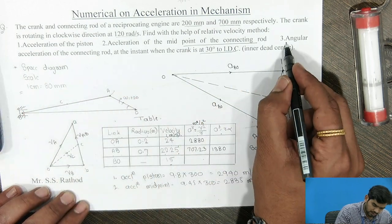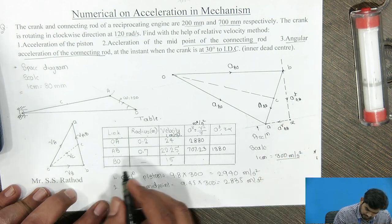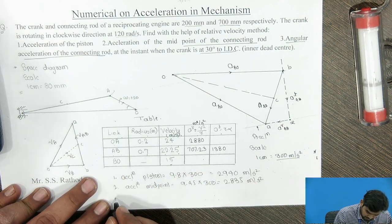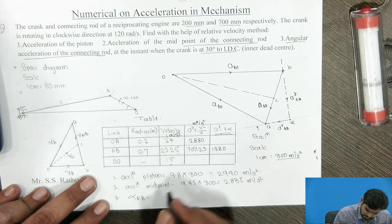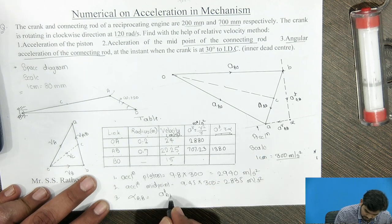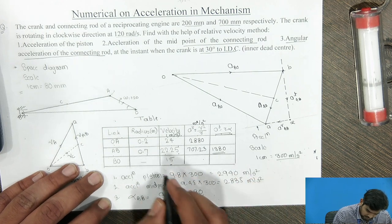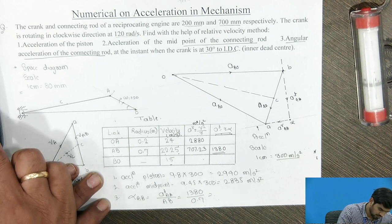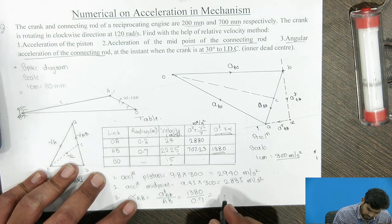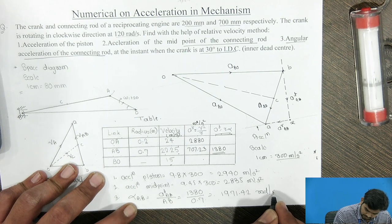For the angular acceleration of the connecting rod AB, we need to find alpha. Using the equation: tangential component AT equals radius times alpha, so alpha of AB equals the tangential component divided by the radius of AB. The tangential component of AB is 1380, and the radius of AB is 0.7, giving alpha of AB equal to 1971.42 radian per second squared.